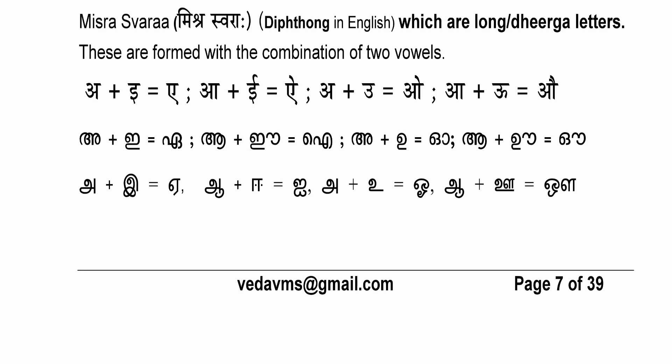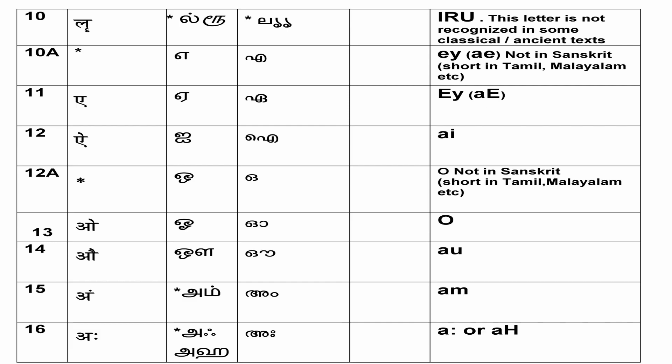In many Indian languages, especially Dravidian languages, we hear a short 'o', but in Sanskrit only the long 'o' exists — a combination of 'a' and 'u'. The next letter is 'au', also a misra swara — a combination of long 'a' and long 'u'. Saying 'a' and 'u' slowly gives you 'au'. This is also a long letter consisting of two matras.